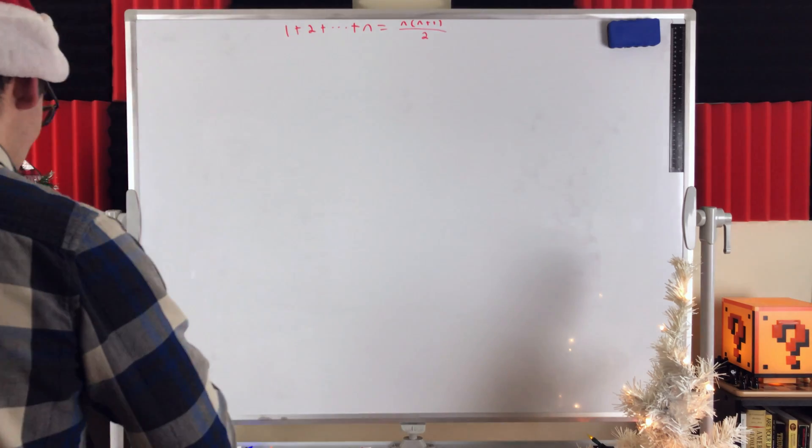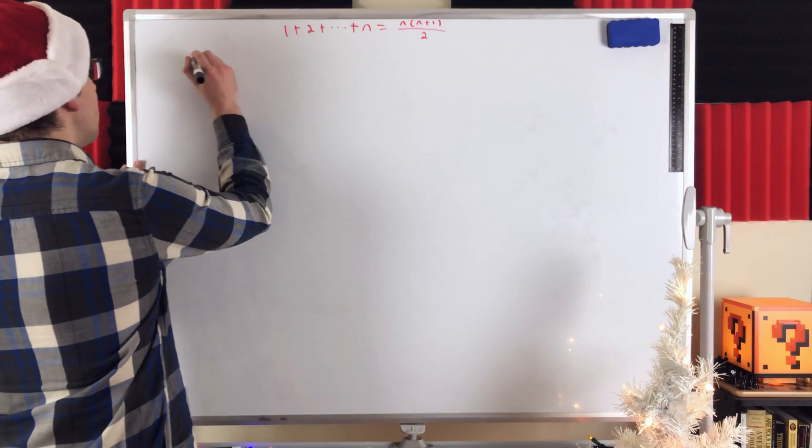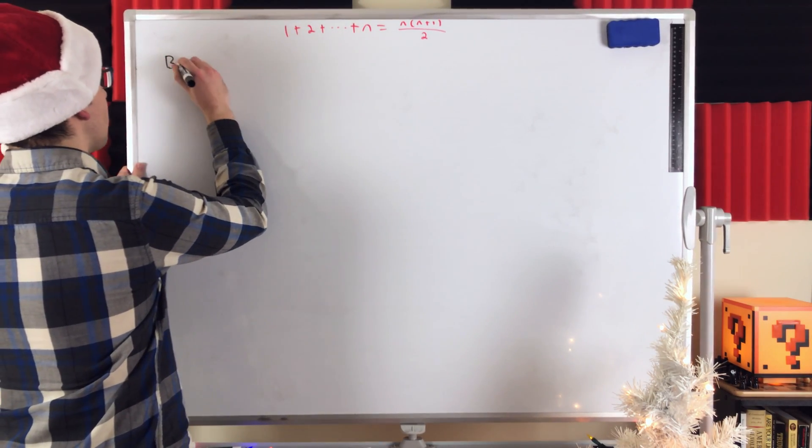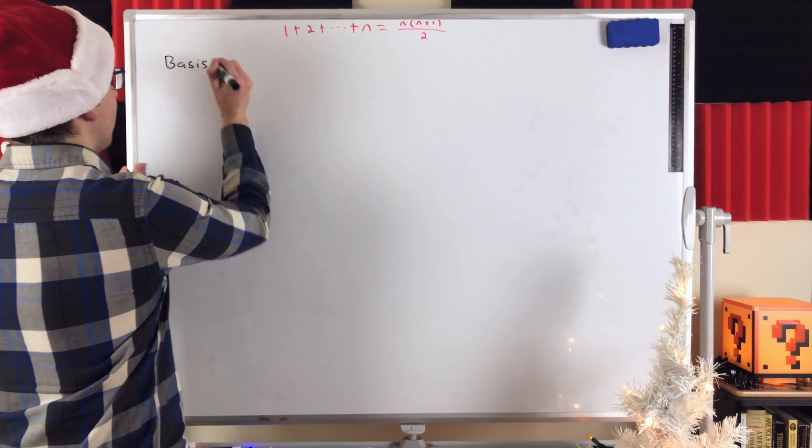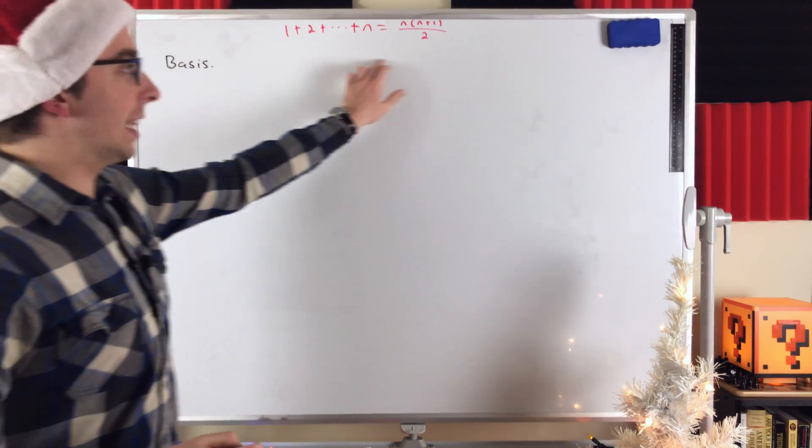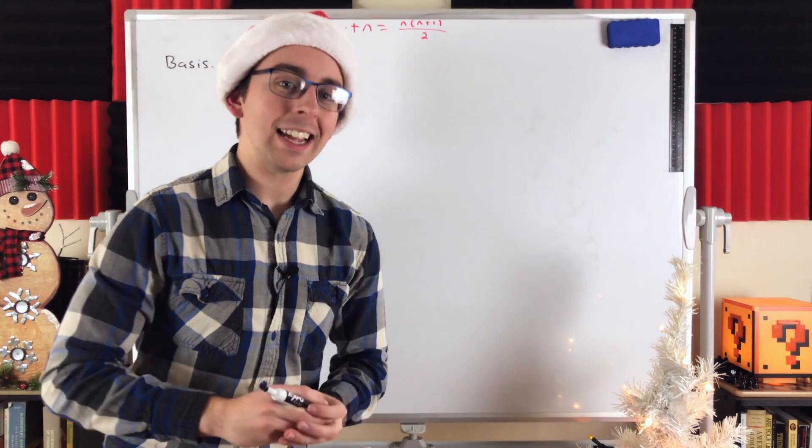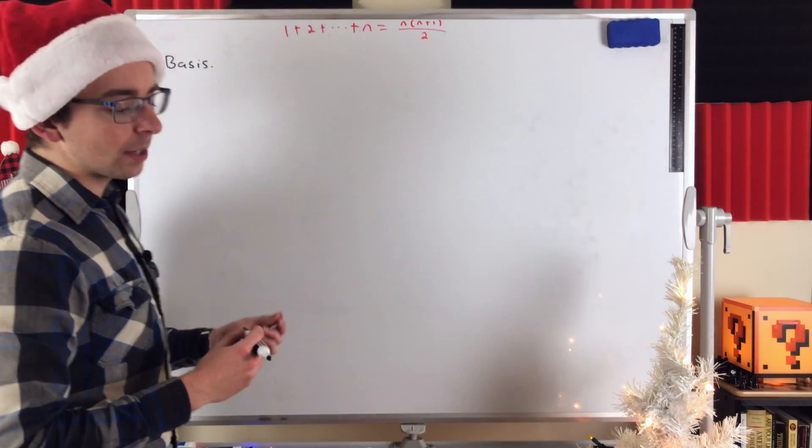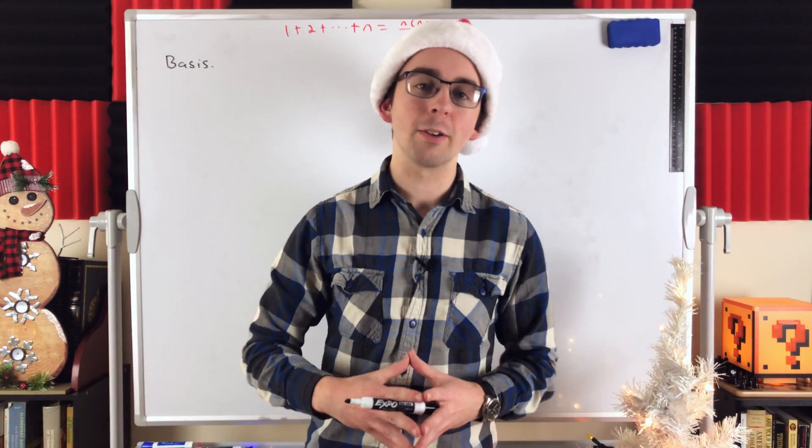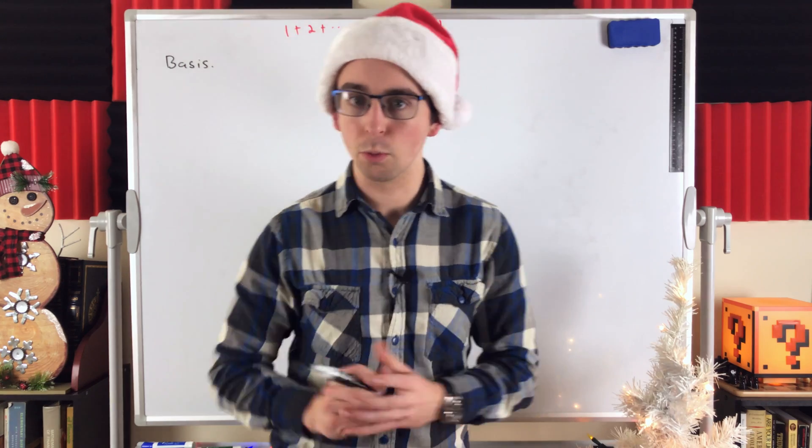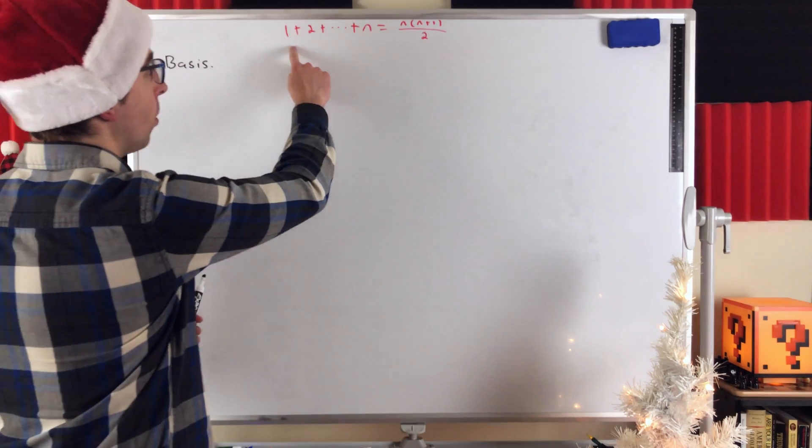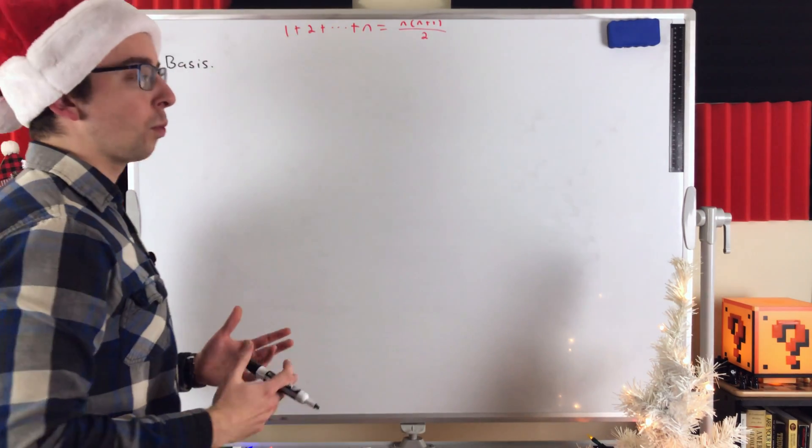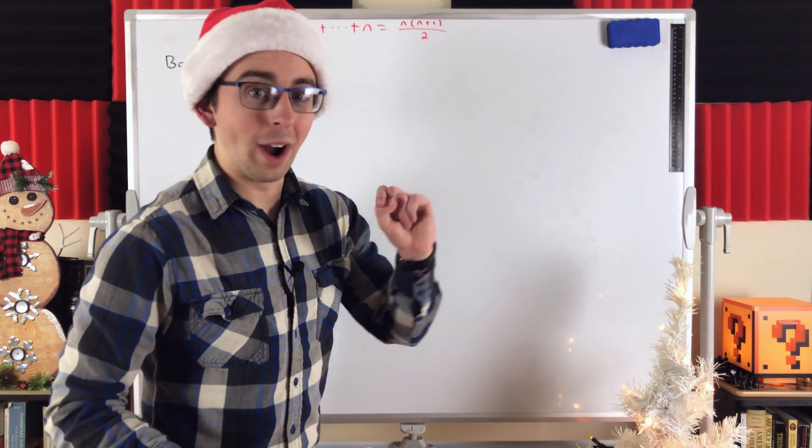With that said, let's get on with it. As you may know, a proof by induction begins with the basis step. In the basis step, we want to prove that our claim, our result, is true for the first number we're interested in. In this case, we're talking about counting numbers. So the first number we're interested in is n equals 1. We want to show that this equation holds for n equals 1. The sum of the first 1 counting number.